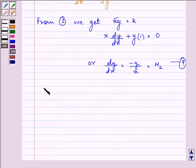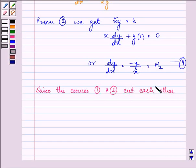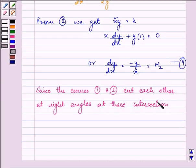Since the curves 1 and 2 cut each other at right angles at their intersection (x, y), we have that m1 times m2 should equal negative 1.